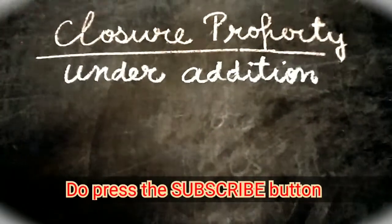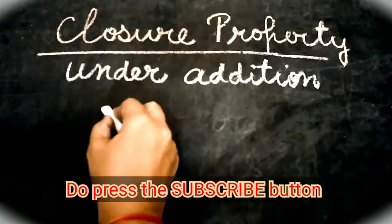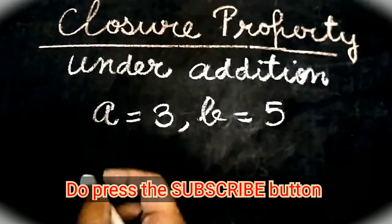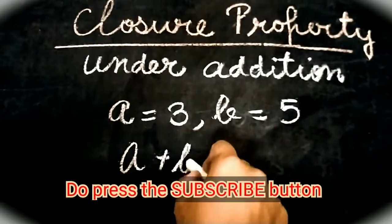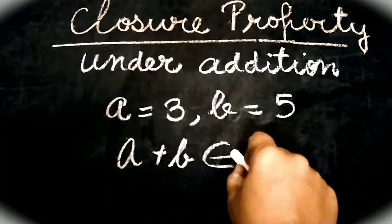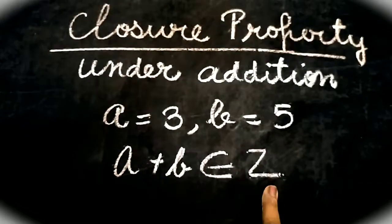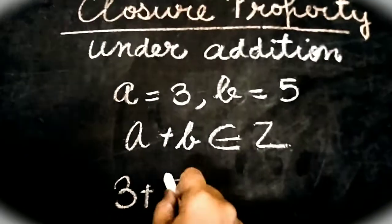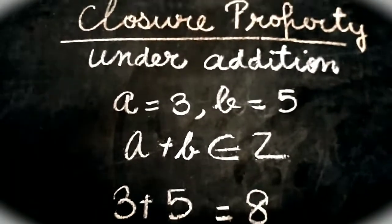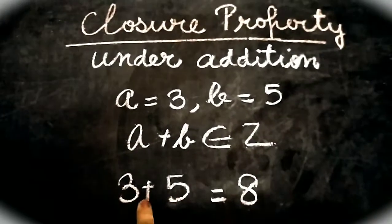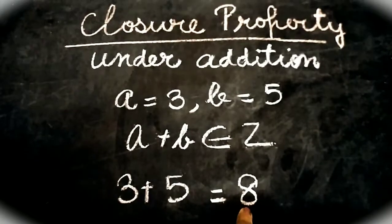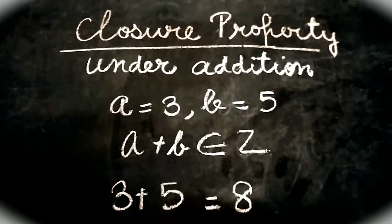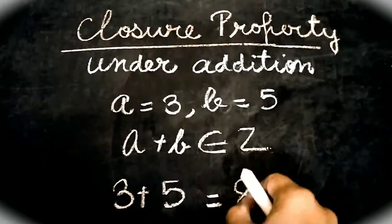Now let us check the closure property under addition. Let us suppose that A is 3 and B is 5. By closure property, A plus B should also be an integer. You know that Z is the symbol for writing integers. So 3 plus 5 is equal to 8. Here 3 is also an integer and 5 is also an integer, and when you add them it becomes 8. Now 8 is definitely an integer.